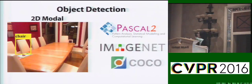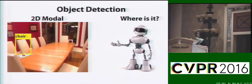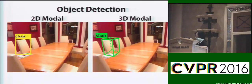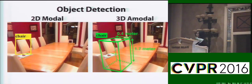Traditionally, object detection produces object categories along with a 2D bounding box around the visible part of the object. Although this is useful for some tasks such as object retrieval, it is rather unsatisfying for further reasoning grounded in the real 3D world. Instead, in this paper we focus on amodal 3D object detection, which aims to produce a 3D bounding box around the whole object and gives real-world dimensions regardless of truncation or occlusion.